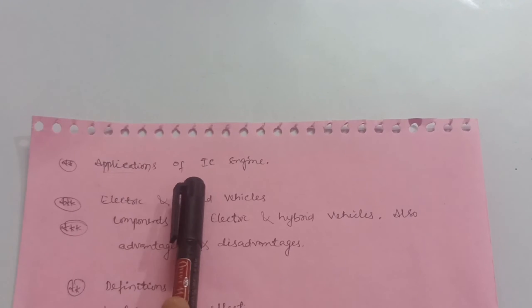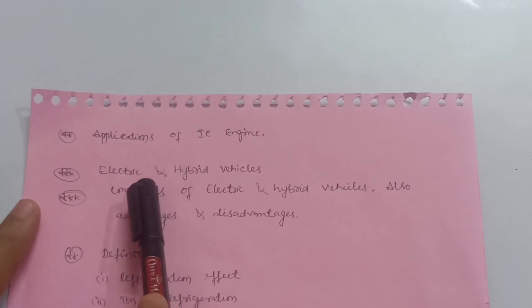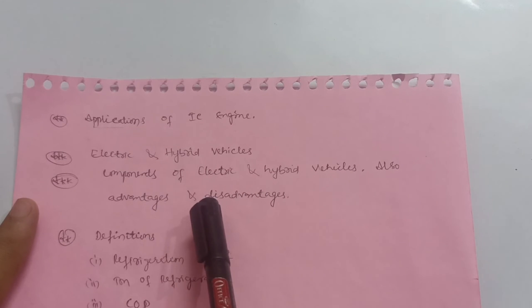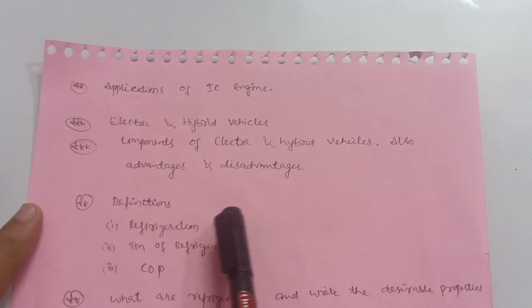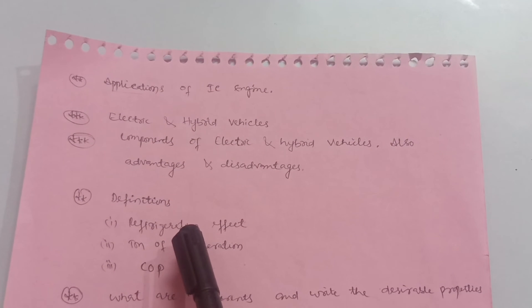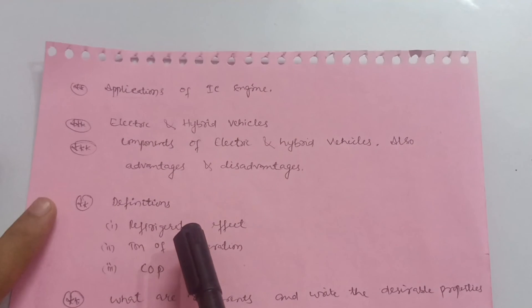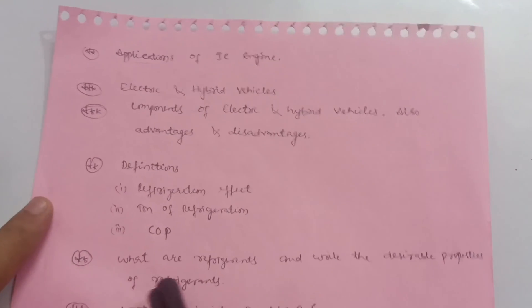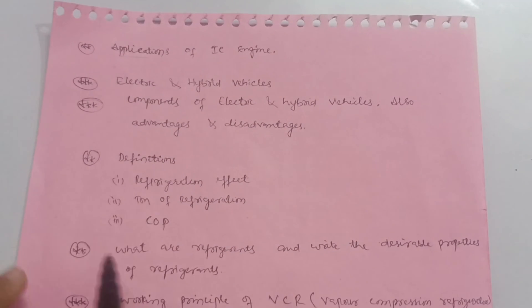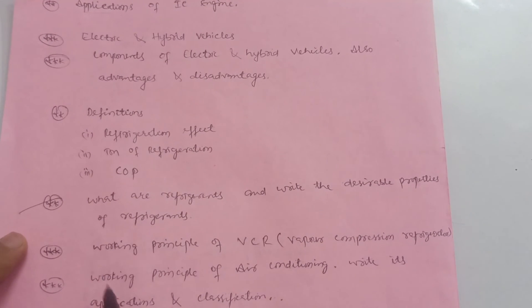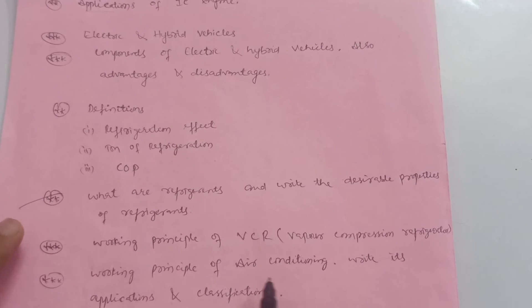Next, applications of IC engines — again an important topic. Next, electric and hybrid vehicles and their components — also mention advantages and disadvantages. Next, some thermodynamics definitions that are included in Elements of Mechanical Engineering this time: refrigeration effect, ton of refrigeration, COP, refrigerants, and desirable properties of refrigerants — it may be a 6 or 8 mark question. Next, working principle of VCR (Vapor Compression Refrigerator) and working principle of air conditioning with applications and classification.